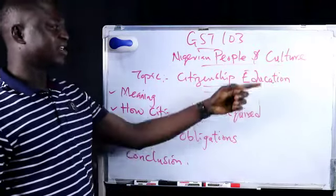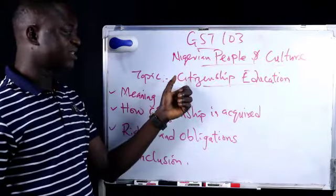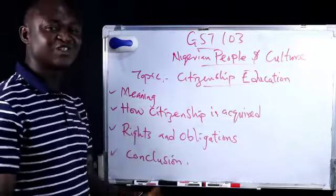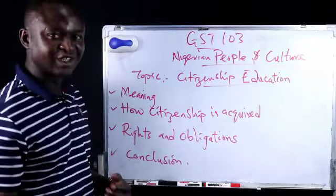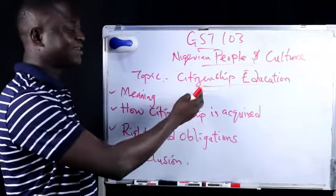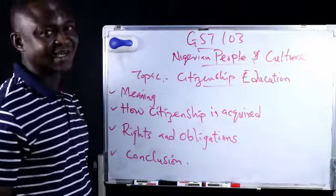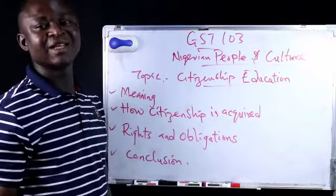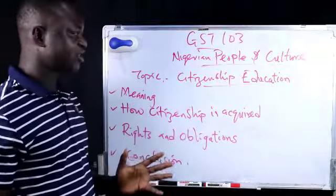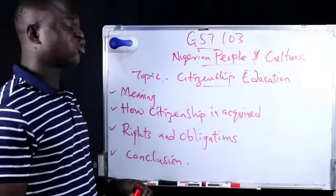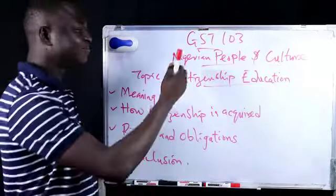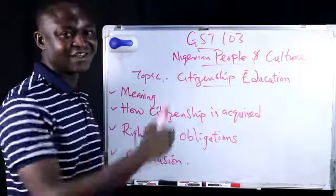We are now looking at citizenship. By citizenship, we are talking about who we call a Nigerian — who is a Nigerian and how do you become one. Citizenship refers to individuals who are legally recognized as members of a society. Nigerian citizens are those that the laws of Nigeria recognize as members of Nigerian society.